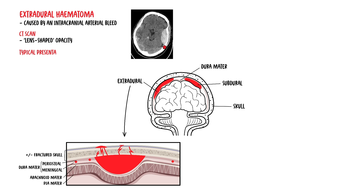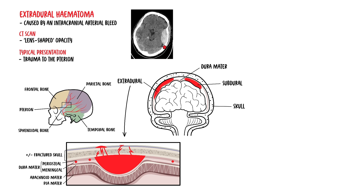The typical presentation of a patient with an extra-dural hematoma is trauma to the pterion, the weakest area of the skull. They can also get headaches and a fluctuating level of consciousness. This typically occurs after a knock on the head — for example, while playing baseball or cricket in a young person, or following a fall in an elderly patient.